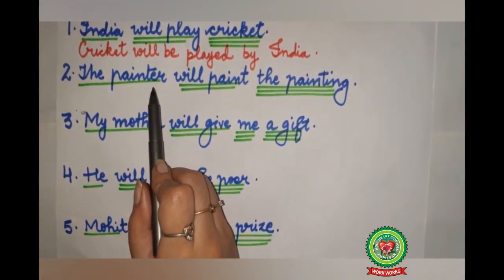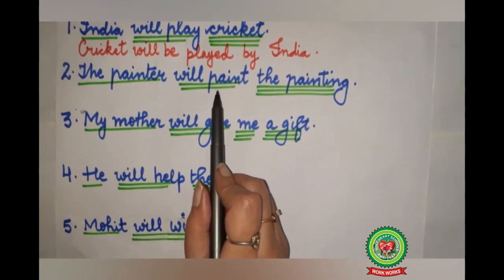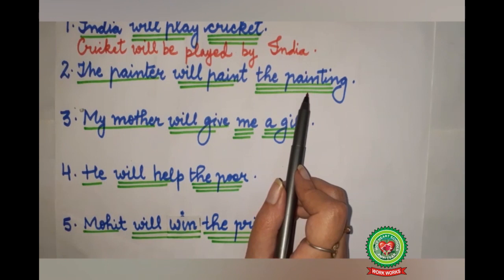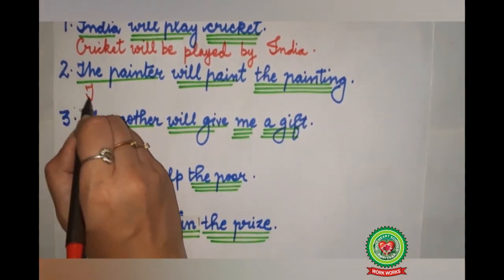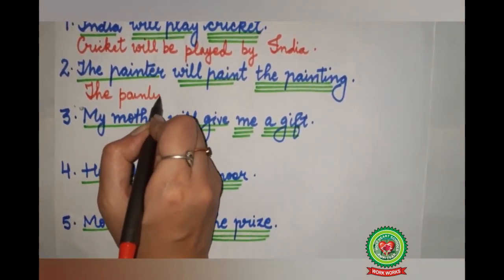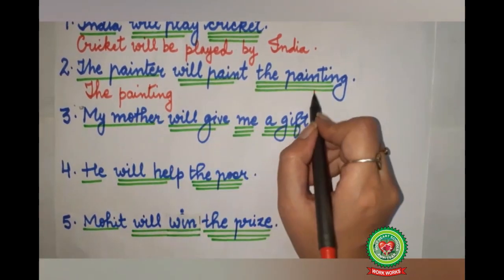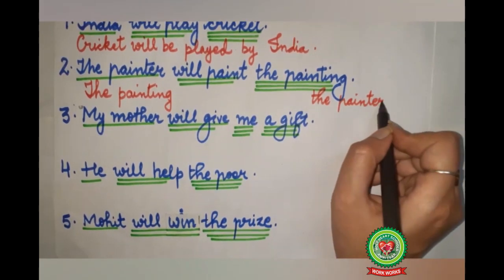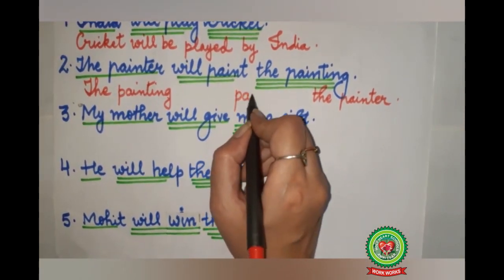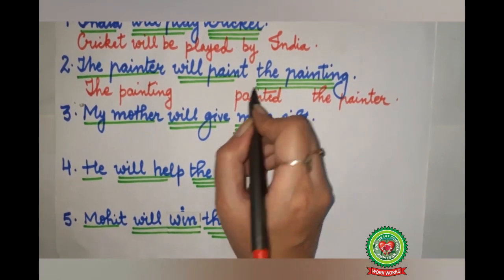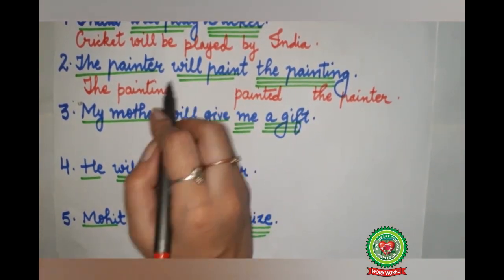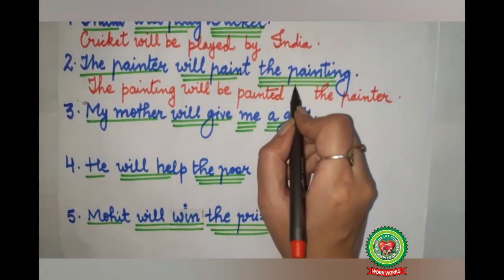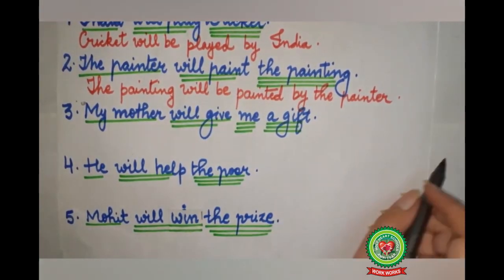Now the second sentence: 'The painter will paint the painting.' Who? The painter — subject, single underline. 'Will paint' — action word, double underline. What? The painting — object, triple underline. The painting comes in the beginning, the painter goes to the last. 'Paint' changes to its V3 form 'painted', and 'will' changes to 'will be'. The sentence becomes: 'The painting will be painted by the painter.' Full stop.